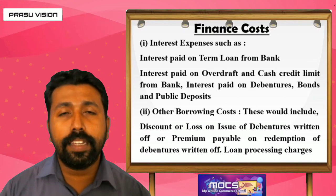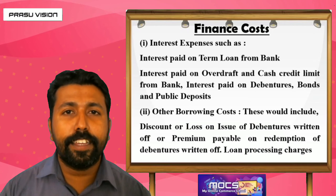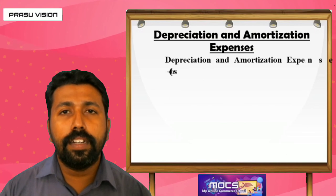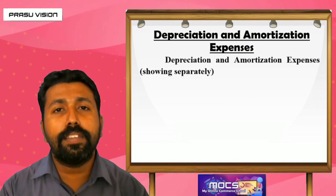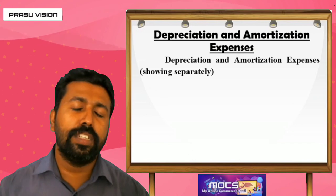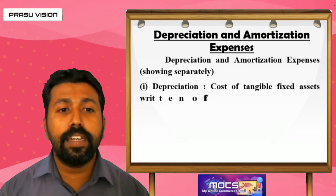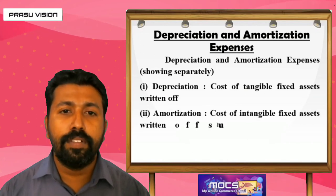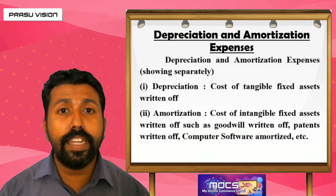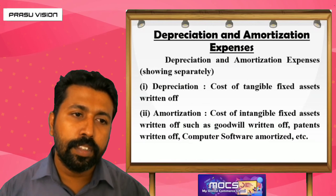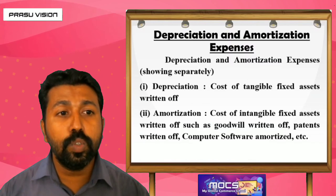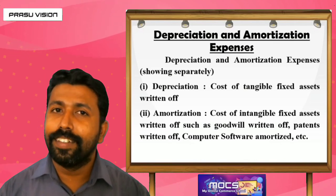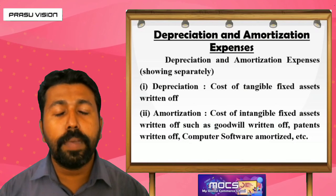Depreciation and amortization refer to the decline in the value of tangible and intangible assets respectively. Depreciation is the cost of tangible fixed assets written off. Amortization is the cost of intangible fixed assets written off — for example, goodwill written off and patent written off. So remember, depreciation is related to tangible assets, and amortization is related to intangible assets.